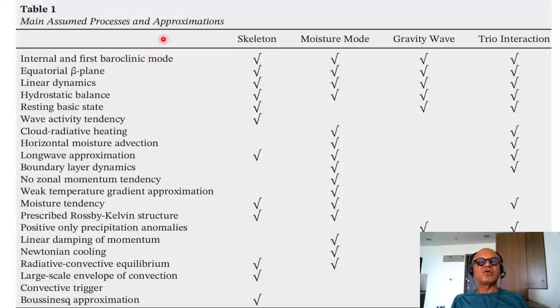So here are the main assumed processes and approximations. I won't go through which model is assuming what. But we will just look at the list of assumptions in the skeleton model, Andy Majda's moisture mode, Eric Maloney, Adam Sobel, gravity wave model, and trio interaction by Bin Wang. So we look at assumptions that belong in the processes in the internal and first baroclinic mode, equatorial beta plane. So F plane just doesn't work, linear dynamics, hydrostatic balance, resting basic state, wave activity tendency, cloud radiative heating.